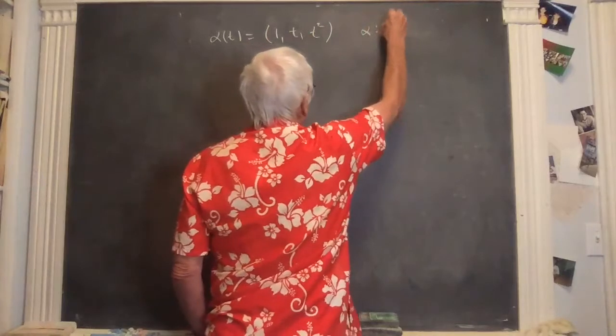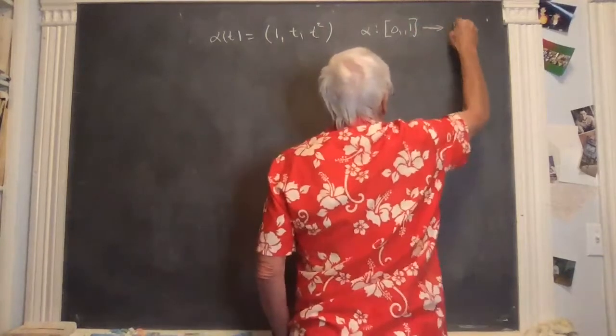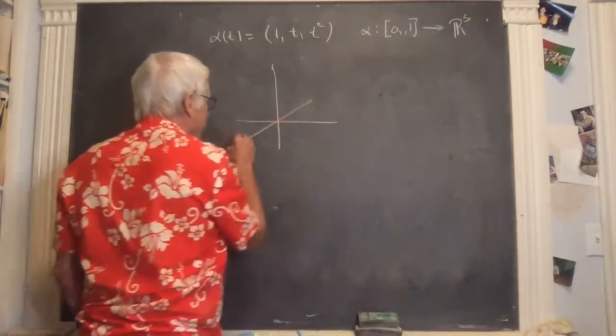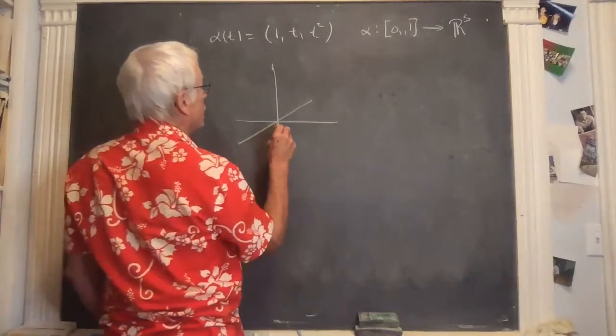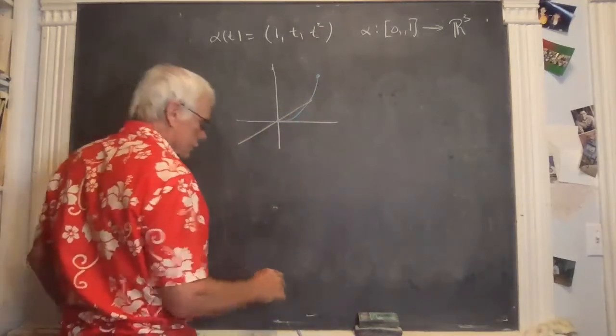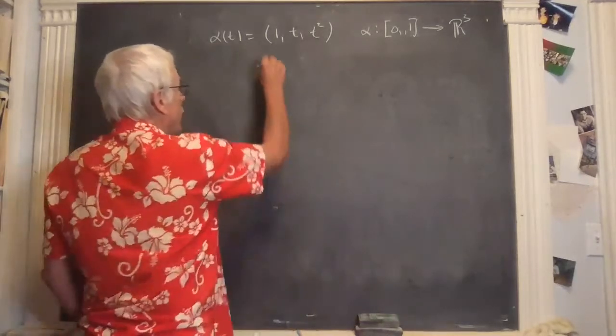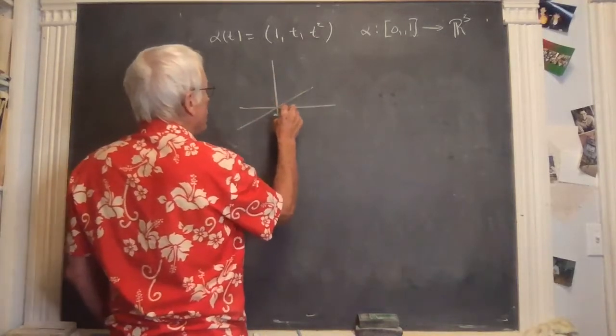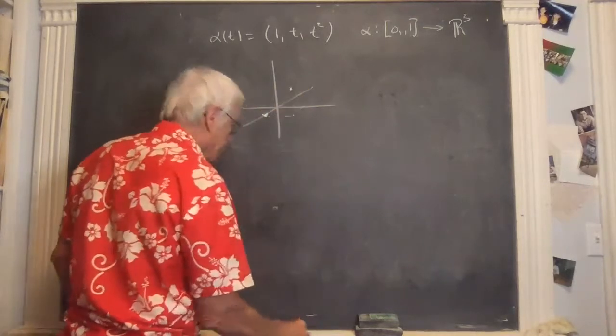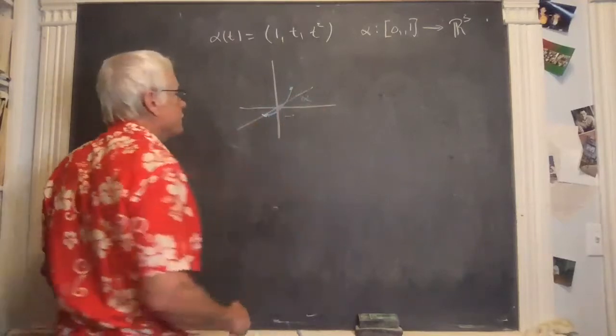And let's see what happens with this. Alpha maps, say, let's begin with a specific interval between 0 and 1 in the real number line, maps into three dimensions. And it's a space curve. You can take a look at it, and it kind of zooms up like this. Begins at (1,0,0) when t is 0 and ends at (1,1,1). And it zooms up something like this. So here is a plot of alpha.